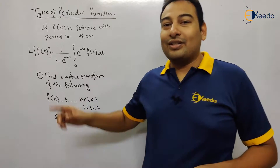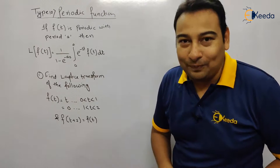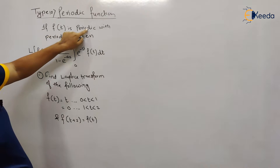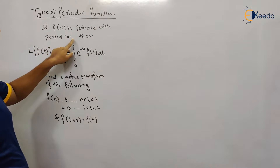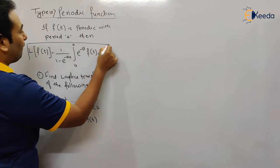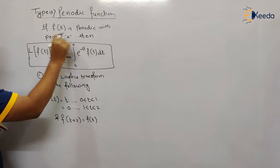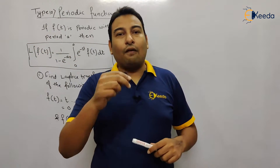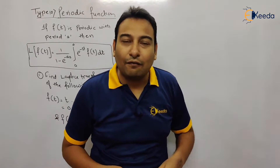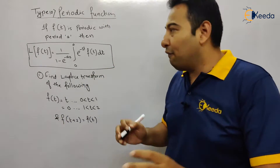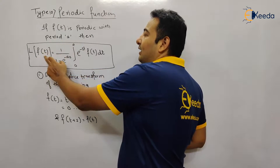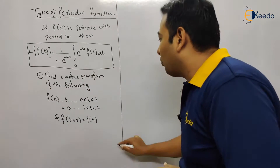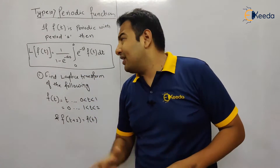Let's discuss type number 10: periodic function. The definition is: if f(t) is periodic with period 'a', then the Laplace of f(t) is given by this definition. A periodic function is one which repeats itself after a particular interval. If a function is periodic, then its Laplace is given by this particular formula. We'll solve the first problem to understand this definition.